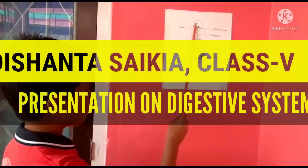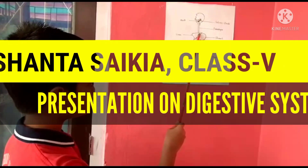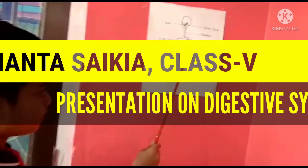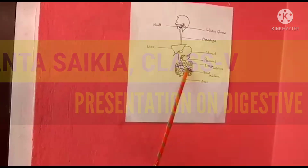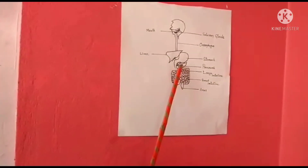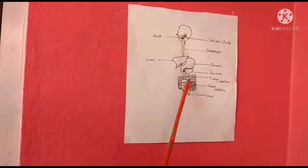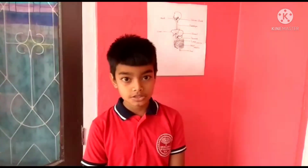Mouth, oesophagus, liver, stomach, pancreas, small intestine, large intestine and anus. So, what is the digestive system? How does it work? The digestive system is an organ system that helps us in digestion.